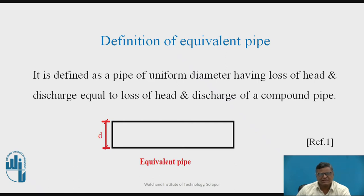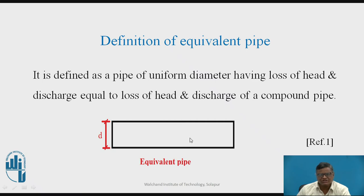Firstly, let us see what is meant by an equivalent pipe. It is defined as a pipe of uniform diameter having loss of head and discharge equal to the loss of head and discharge of a compound pipe. So the equivalent pipe has a uniform diameter, and it is called equivalent because the loss of head and discharge of that uniform pipe are equal to the loss of head and discharge of the compound pipe.